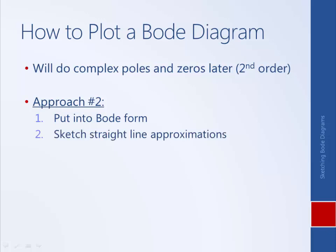We then sketch the straight line approximations of the individual components — the gains, the differentiators, the poles. Step three, we then add the graphs, both for the magnitude plots and the phase plots, based on those mathematical properties we introduced previously. This results in a straight line approximation of the Bode diagram of a given transfer function, and we can stop there. If we want to make it a little more accurate, we can approximate the curves of the true Bode diagram as opposed to just the straight line approximation.